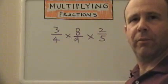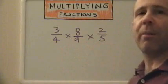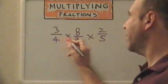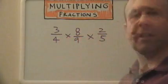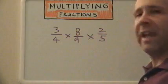For our last problem, we're going to multiply three proper fractions together. Three-fourths times eight-ninths. Let's go ahead and see if we can first cross-cancel.